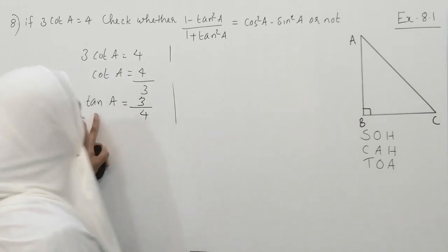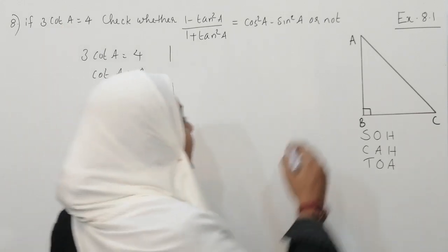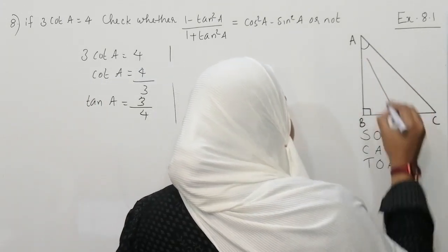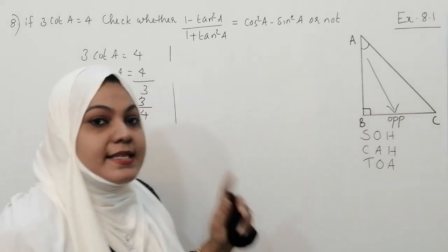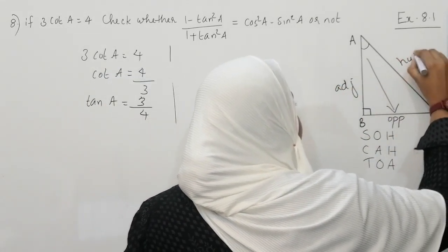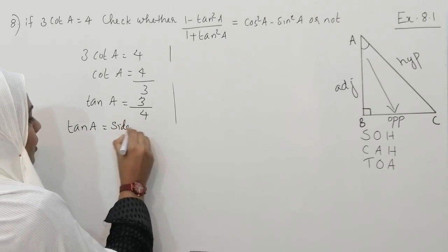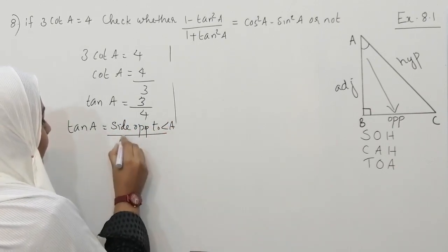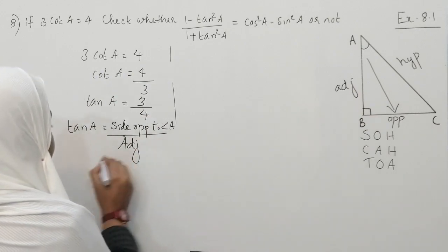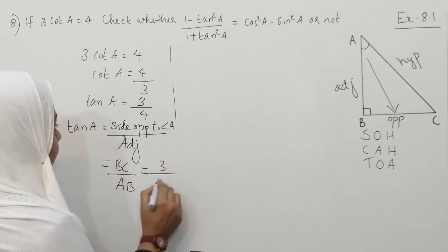Now we are using the SOHCAHTOA trick. Tan means opposite over adjacent. Here our reference angle is A. So I am marking the sides: the side opposite to angle A is BC, and the side adjacent — which contains the 90-degree angle and the reference angle — is AB. So BC equals 3 and AB equals 4.